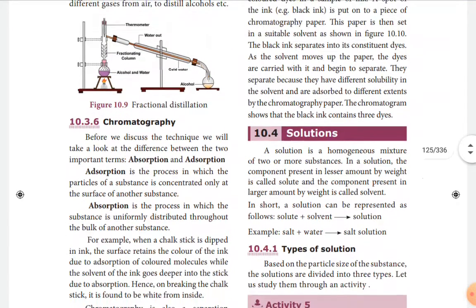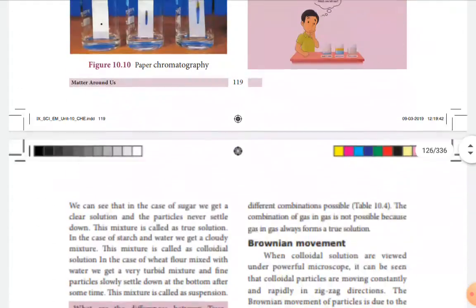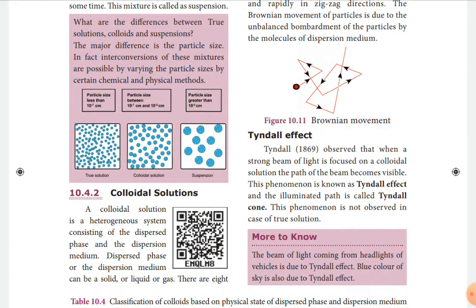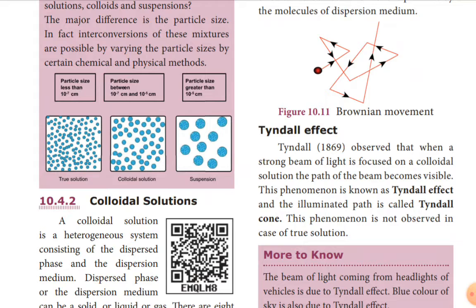A solution is a homogeneous mixture of two or more substances. Solute plus solvent gives a solution. Types of solution based on particle size: true solution, colloidal solution, and suspension. In a true solution, particle size is less than 10⁻⁷ cm; colloidal solution is between 10⁻⁷ and 10⁻⁵ cm; and suspension has particles greater than 10⁻⁵ cm.